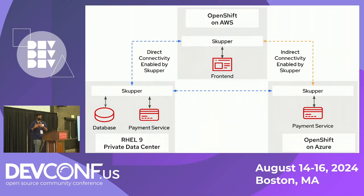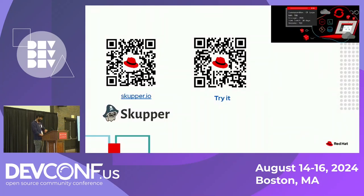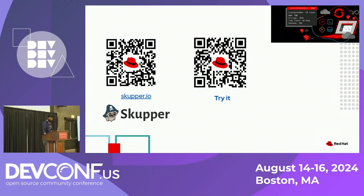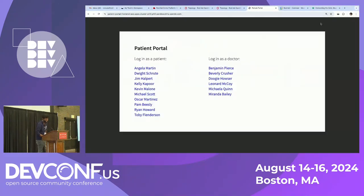When you are thinking about modernization and distributing your microservices, as connectivity becomes an important part of it, you need to start thinking about tools that can really take care of such things for you. That brings me to the end of the session. There are resources where you can try it out, some labs, and the skupper.io open source website — very easy to install and get started. Happy to take questions via email. The patient portal app used Dunder Mifflin employees as sample patient data; the doctors' section is for checking appointments but that functionality wasn't built for the basic demo.